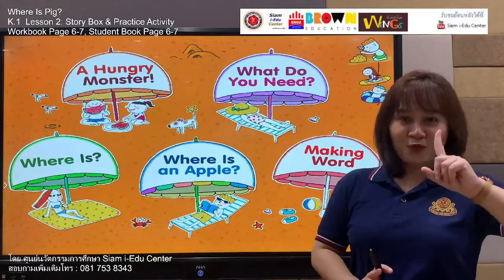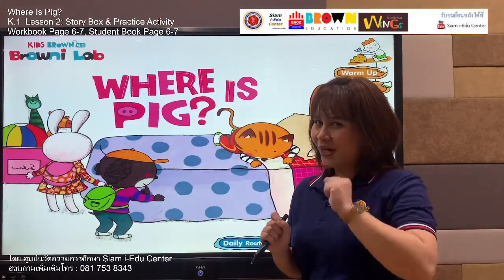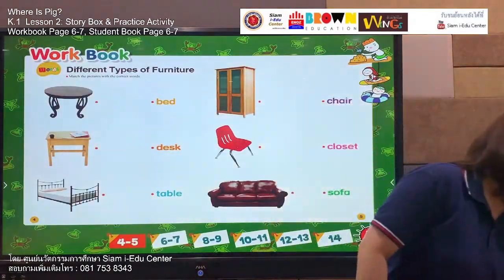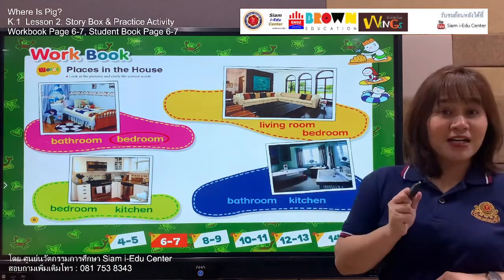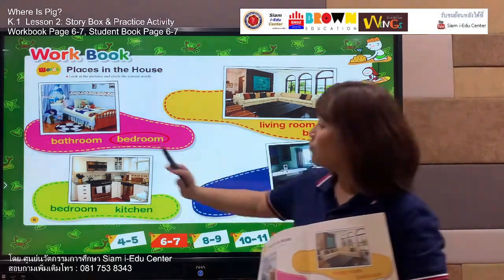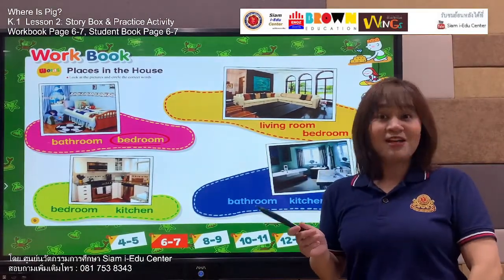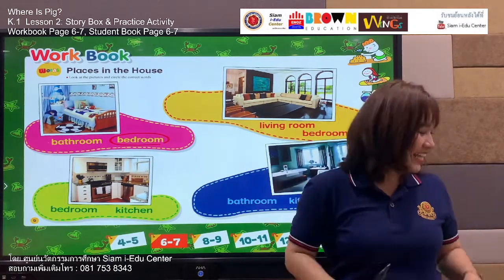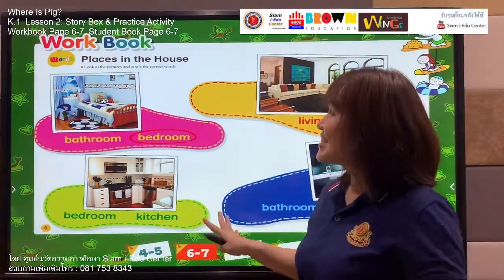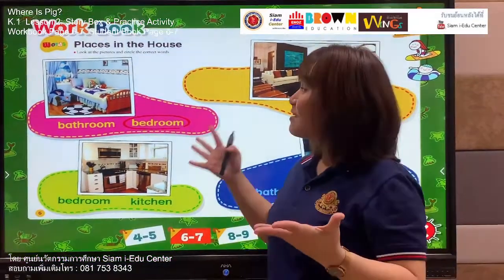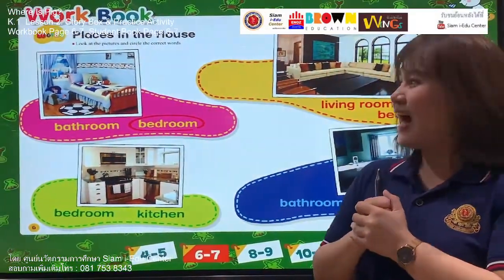Next, let's move to the next part. This time, everyone, we are going to do our exercise with our workbook or worksheet together. Let's bring your workbook beside you and open it on page 6 and 7. Don't forget to find your pen, pencil, colors, or crayons — it's up to you. Our exercise is called Places in the House. We are going to find out the different types of rooms in our house. Let's look at the pictures.